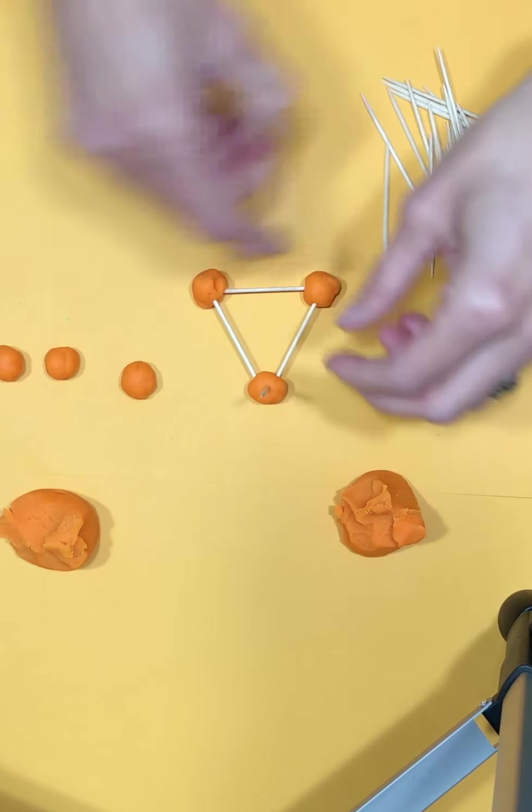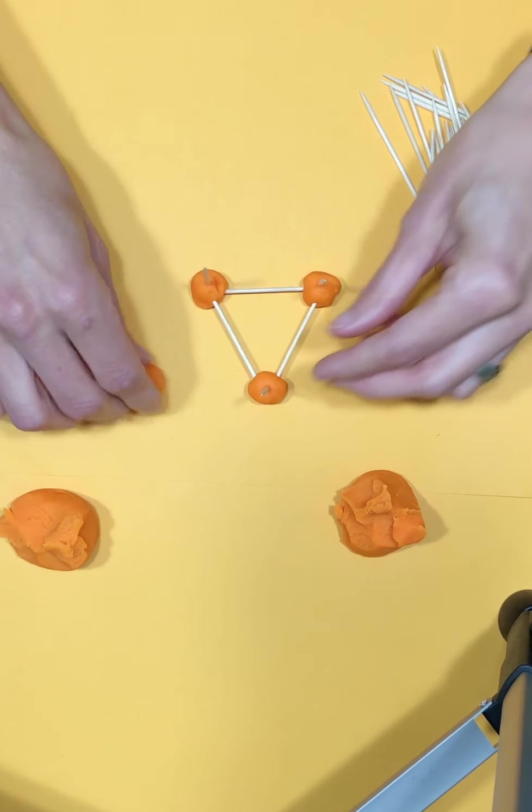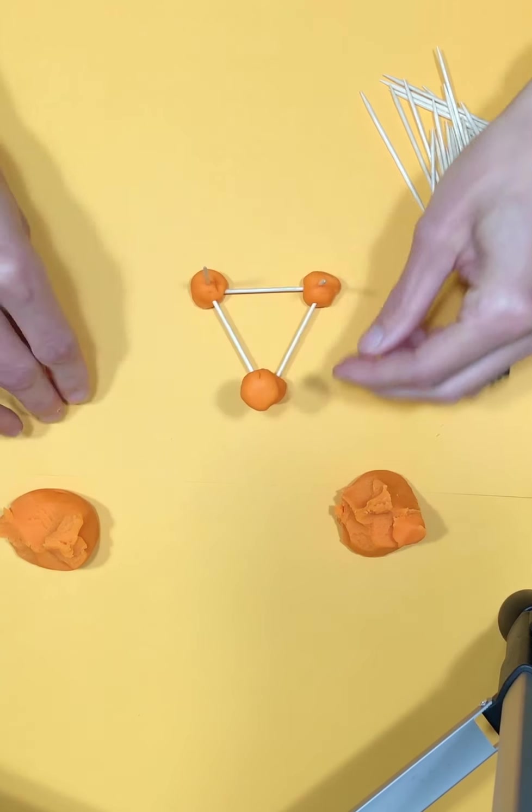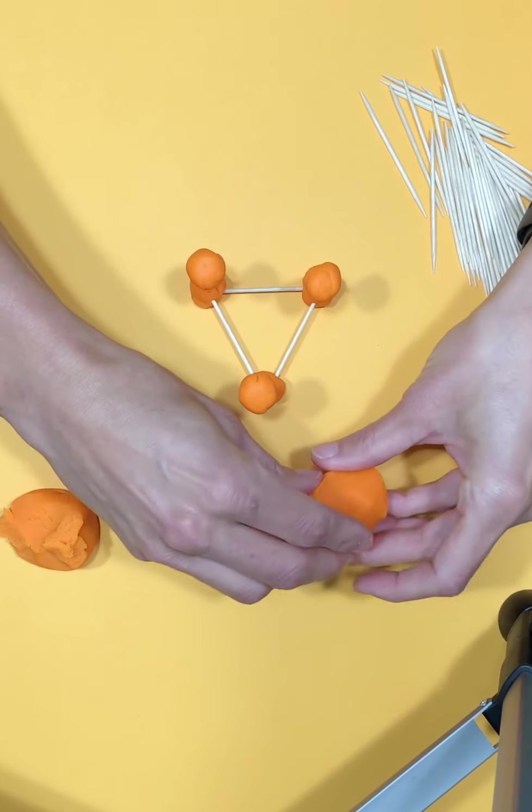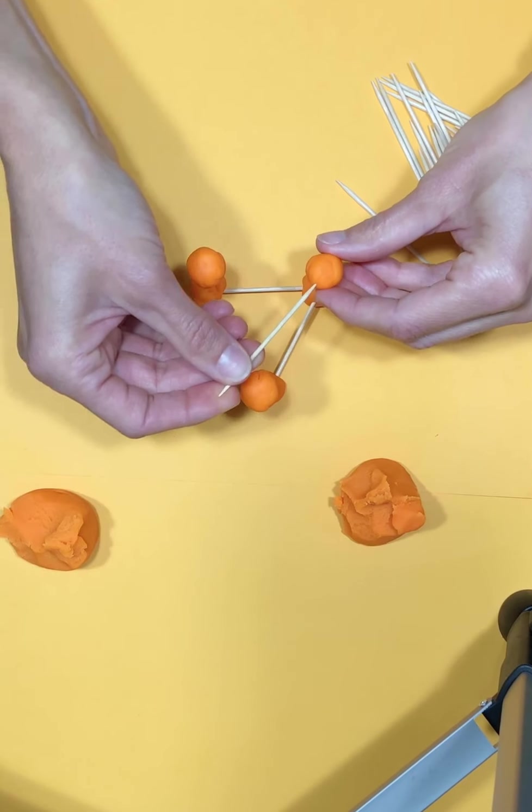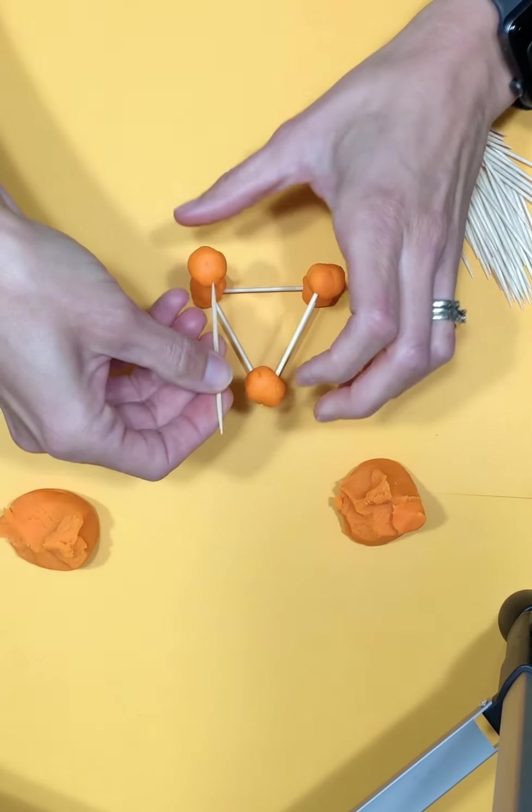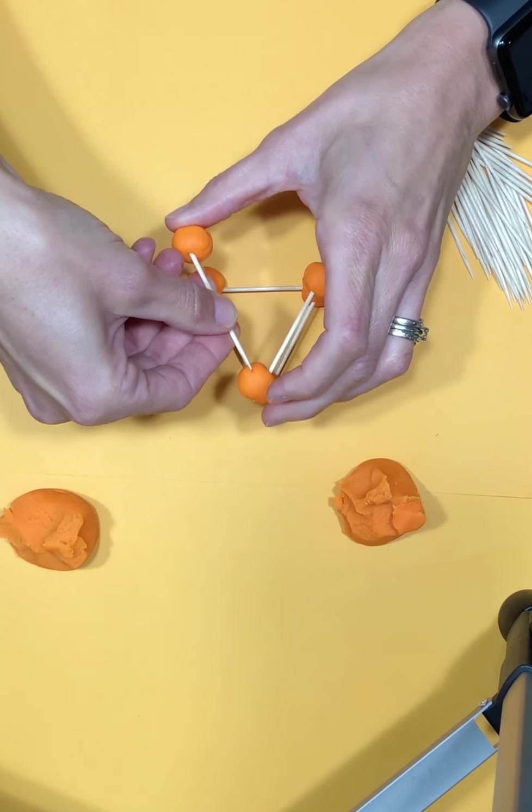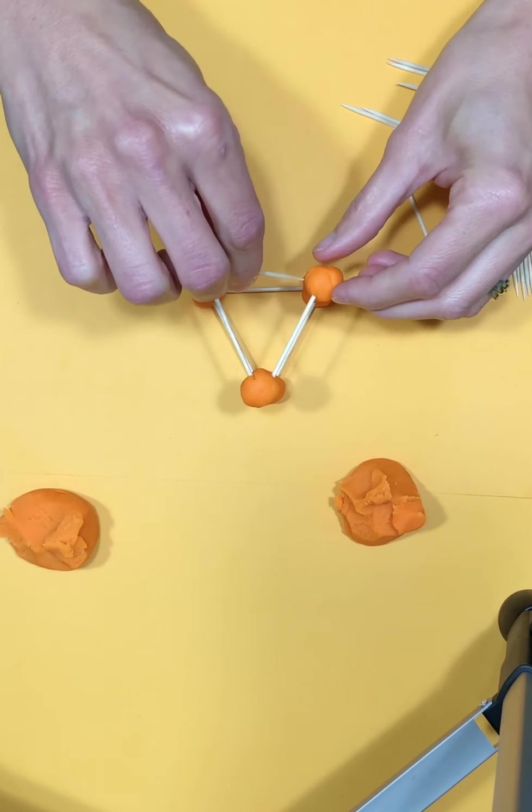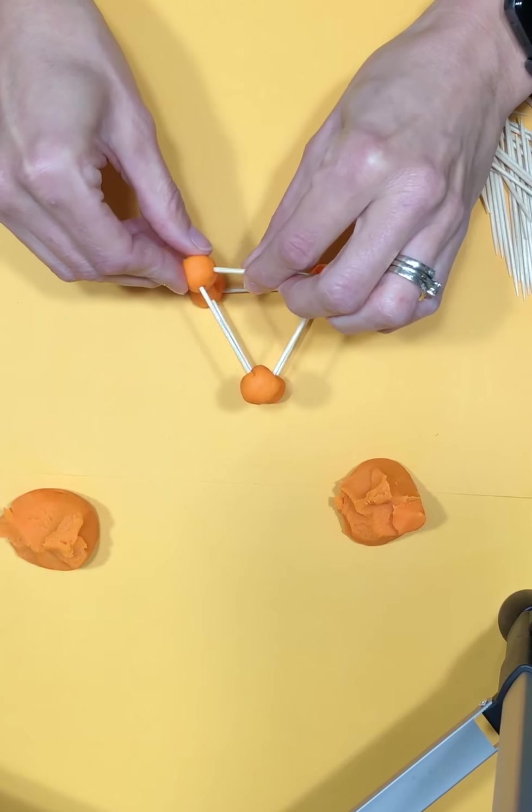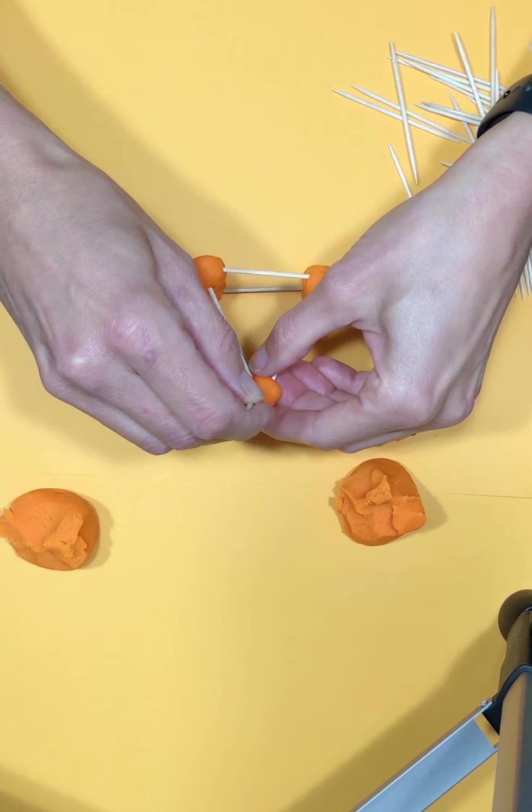Now to build it up, I'm gonna stick some more toothpicks in it. I'm gonna try and keep them in the middle. Since the play-doh's soft, it may start to fall apart, but that's just part of the challenge is to see what way works the best. If you try something and it doesn't work, don't get upset, move on to plan B and try something else, because you never know what might work. I'm just pushing these in till they poke through the other side.